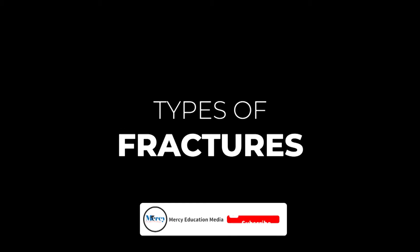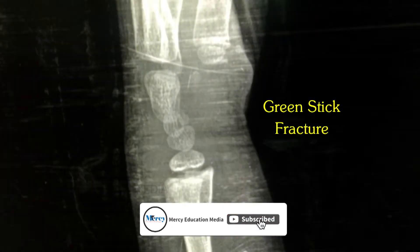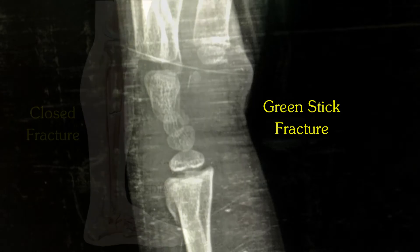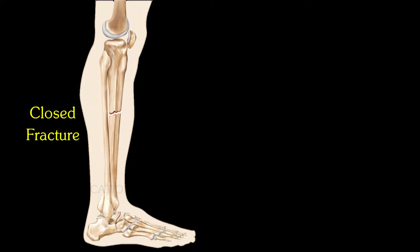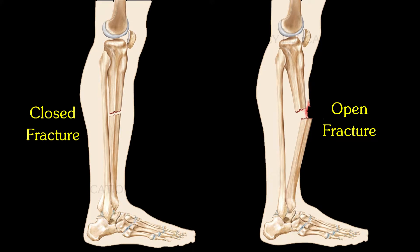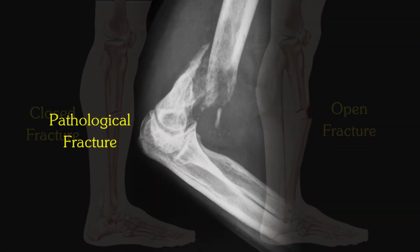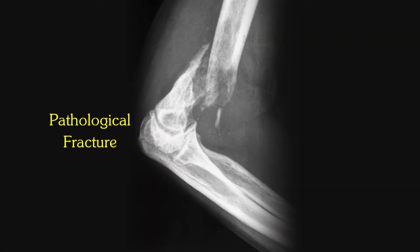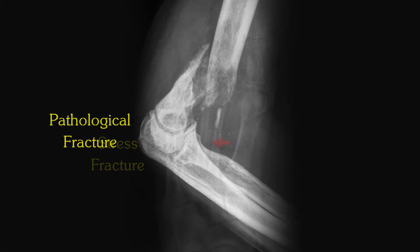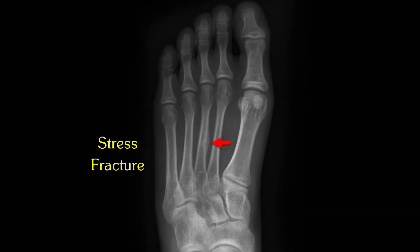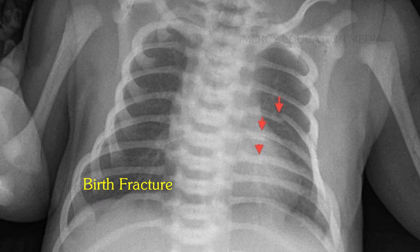The types of fractures include Green Stick Fracture, Closed Fracture, Open Fracture, Pathological Fracture, Stress Fracture, and Birth Fracture. Now let us see the different types of fractures.